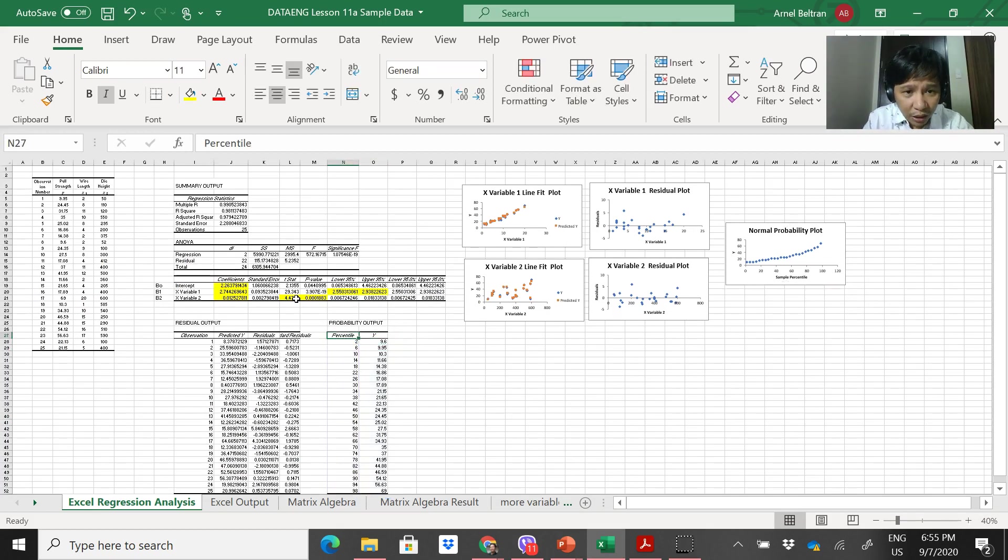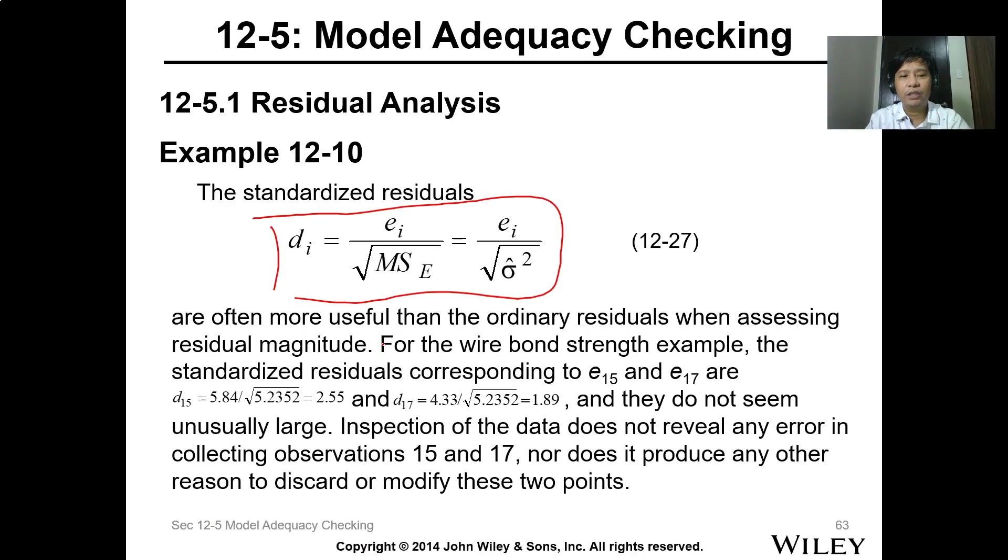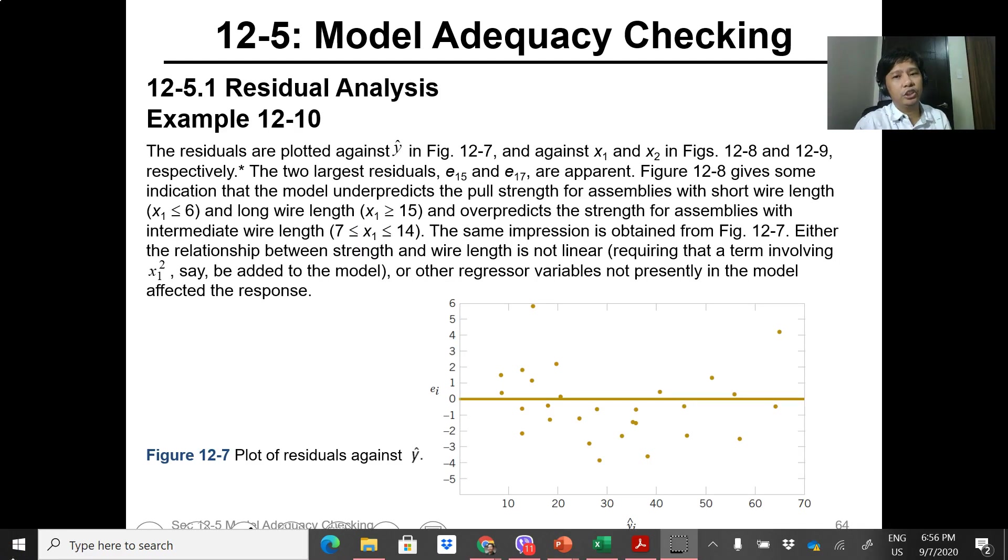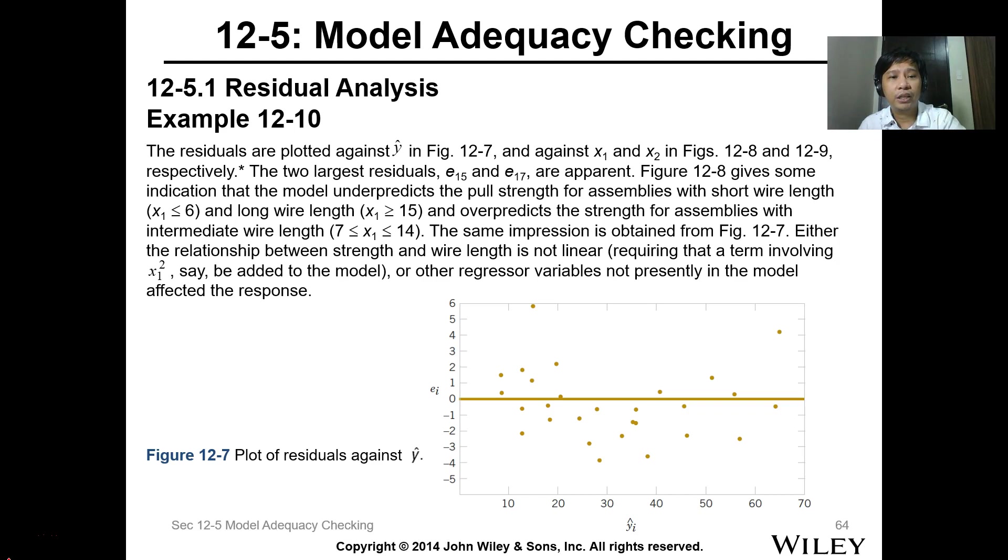Basically this is the residual and this is the probability. If the trend is linear, basically it means we have a normal probability - it follows a normal distribution and the model is a good fit. This is the standard residual. Excel already has this - the plot of normal residual.